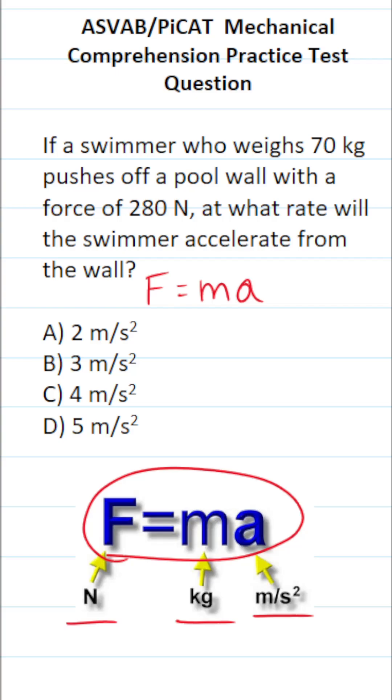Let's identify the variables that we have from the word problem. We know the swimmer has a mass of 70 kg, and they're applying a force of 280 newtons to the wall. And we're going to be solving for acceleration, or A.